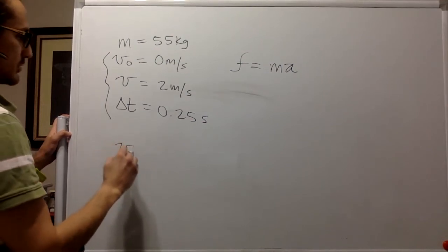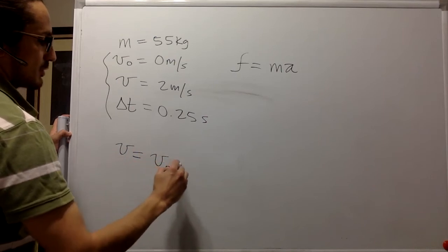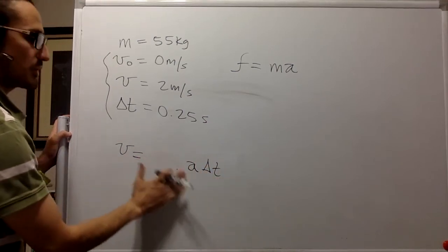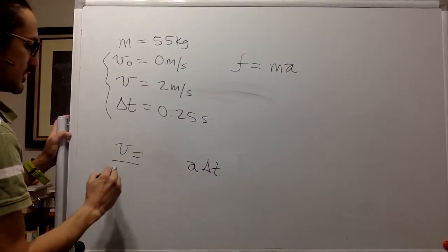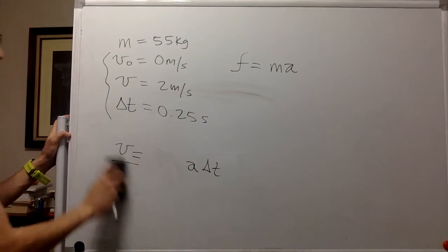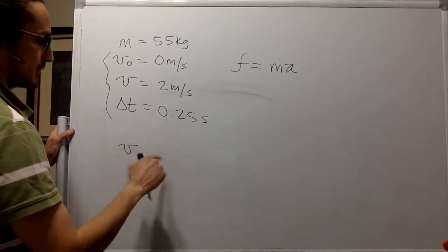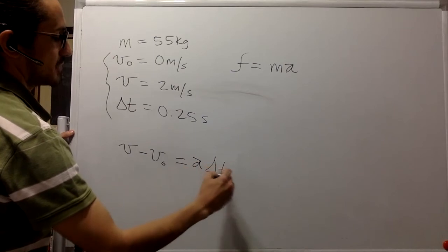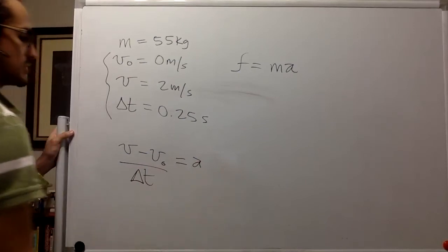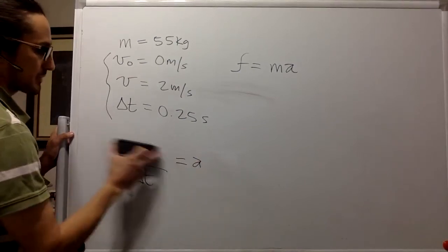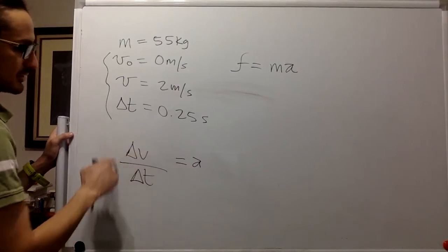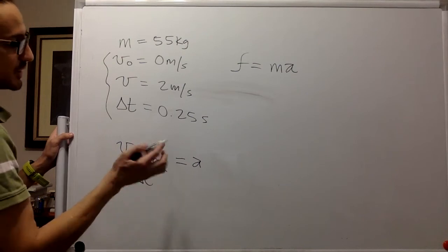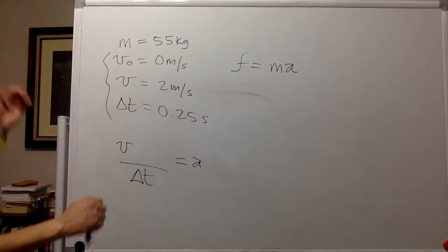So the kinematic equation will tell us that the velocity is equal to initial velocity plus acceleration times time. So now we can put the time over here and we get the acceleration. So this is delta v, delta v divided by delta t. But of course, this one is zero, v naught. So it's just the final velocity, the two meters divided by time.